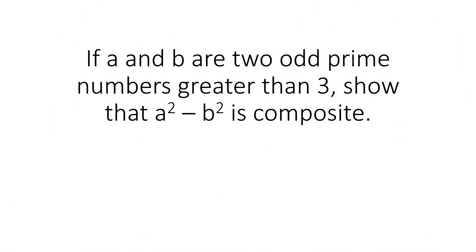Hello, and today we are going to solve the question: if A and B are two odd prime numbers greater than 3, then show that A squared minus B squared is a composite number.